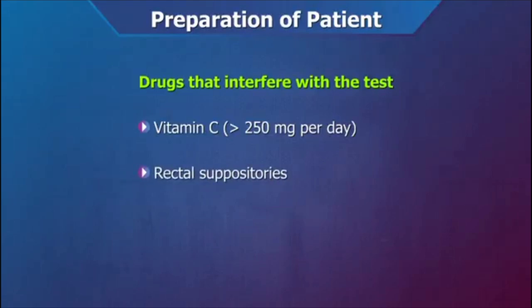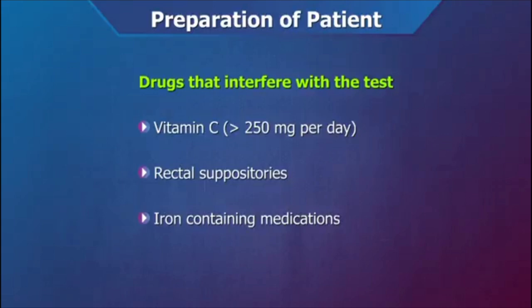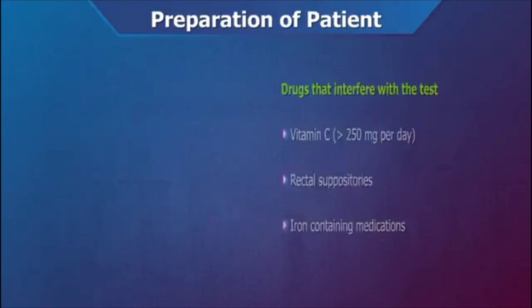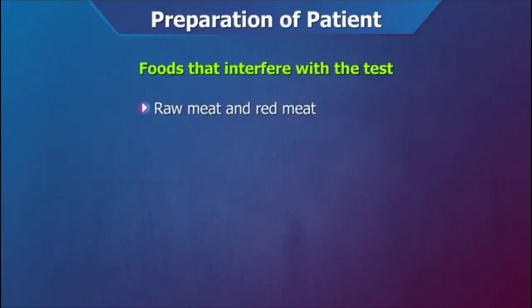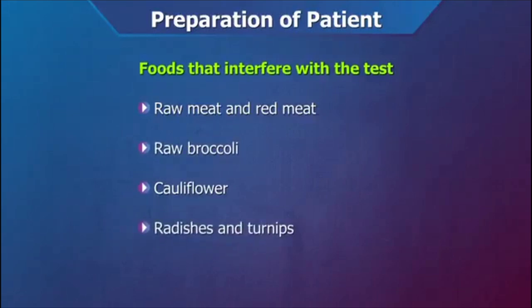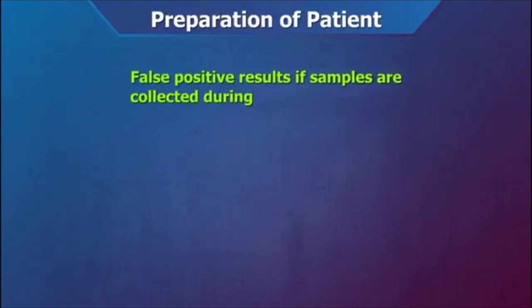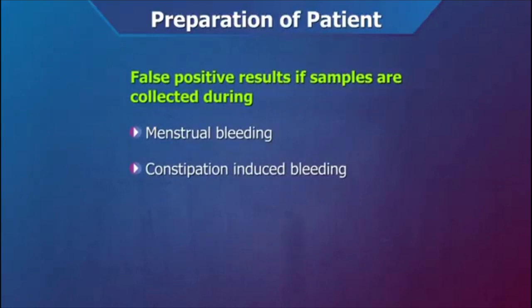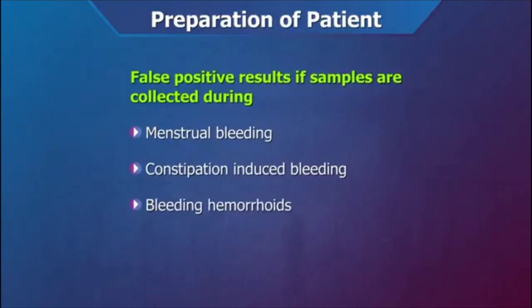Rectal medications such as suppositories and iron-containing medications may also interfere with these tests and should be discontinued 2 days before and during the test period with the consent of the physician. For at least 2 days before and during the test period, all raw meat and red meat should be avoided. Raw broccoli, cauliflower, radishes, and turnips may cause false positive results and hence should be avoided. Stool samples collected during menstrual bleeding, constipation-induced bleeding, bleeding hemorrhoids, or when rectal medication is used may also cause false positive results.